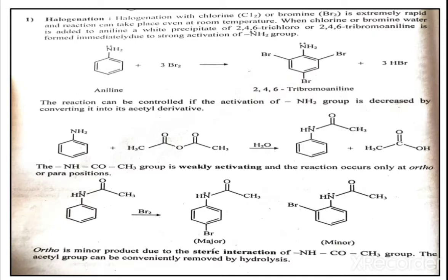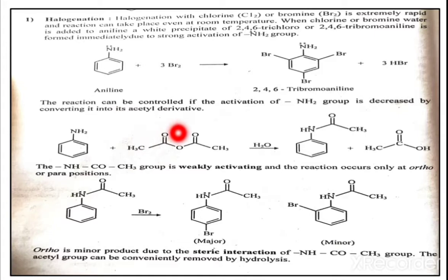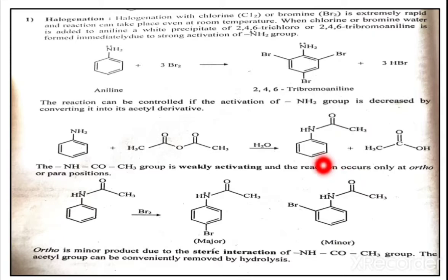The reaction can be controlled if the activation of the NH2 group is decreased by converting it into the acetyl derivative. Aniline is treated with acetic anhydride — the structure is CH3-C(=O)-O-C(=O)-CH3 plus H2O. The nitrogen's lone pair attacks the carbonyl carbon, the bond is relocated, and we get the NH-C(=O)-CH3 group. This NHCOCH3 group is a weakly activating group and the reaction only occurs at the ortho and para positions.